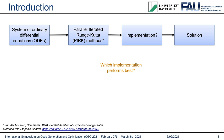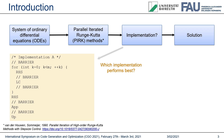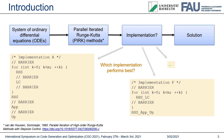A straightforward implementation could, for instance, split all computations into separate, non-overlapping loop kernels. Per PERC iteration K, two kernels RHS and LC are required. RHS covers the evaluation of the right-hand side functions and LC covers the linear combination. Kernels UP are used to compute the next approximation of the solution. Instead of using separate kernels per computation, one could also try to fuse as many computations as possible into one single kernel.